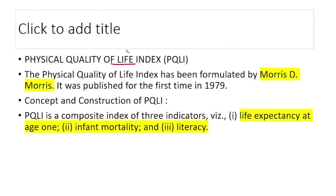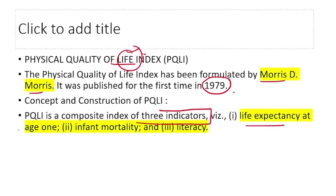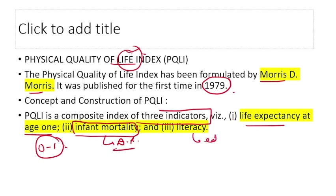Physical Quality of Life Index (PQLI) was formulated by Morris D. Morris and first published in 1979. It uses three indicators: life expectancy at age 1 (chances of survival from 0 to 1), infant mortality rate (death rate of infants), and literacy — representing education. Using these three indicators, the PQLI is calculated.